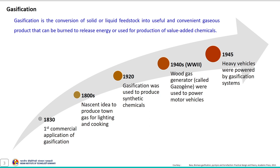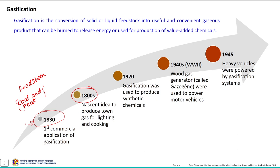Gasification is an established technology whose commercial application dates back to 1830. In the early years, coal and peat were used as feedstock material for the gasification process. In the 18th century, the nascent idea of the process was to produce town gas, mainly for lighting and cooking purposes.